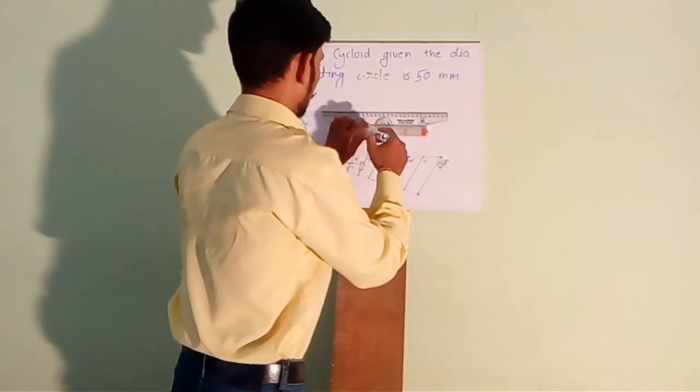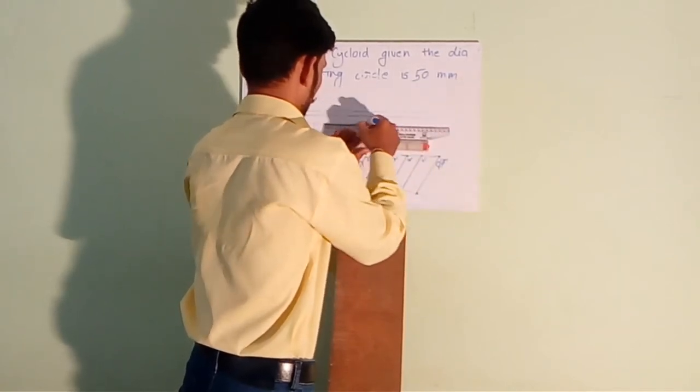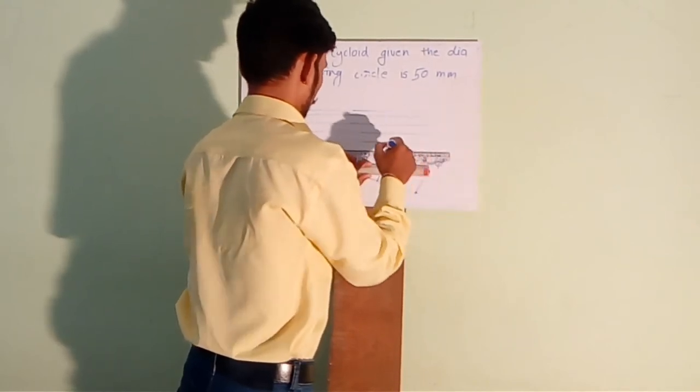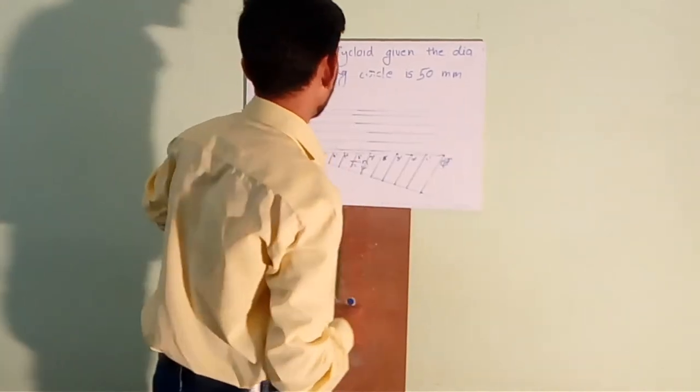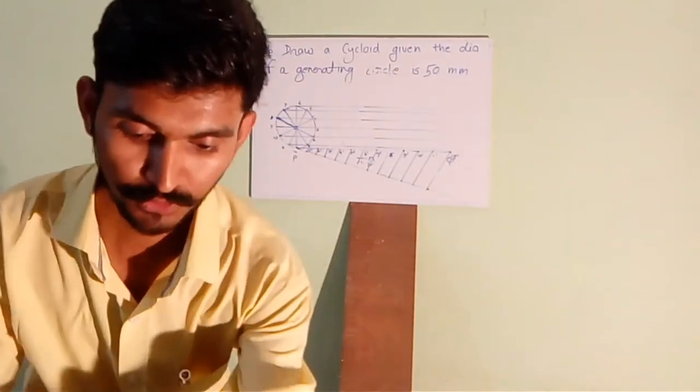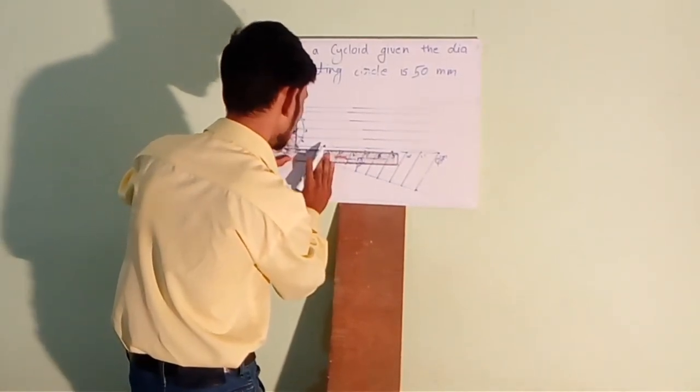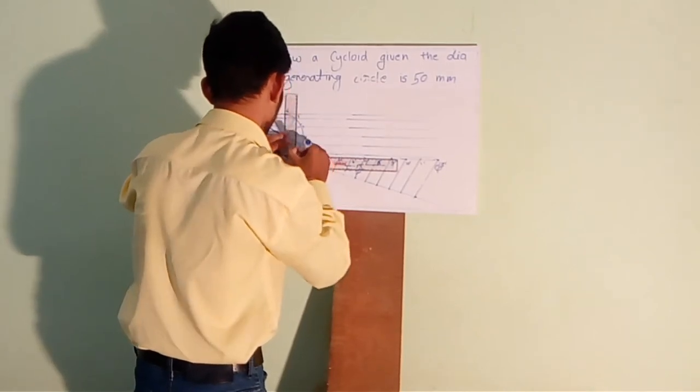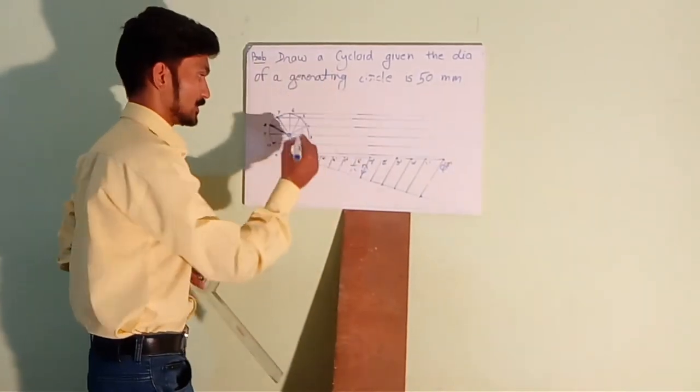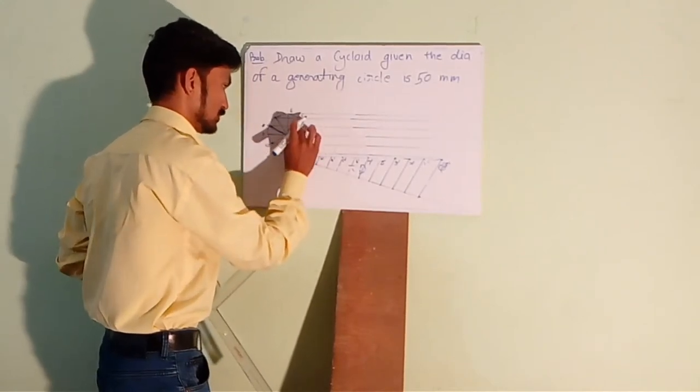And then, draw perpendicular lines to PQ. Draw perpendicular lines such that it will intersect line C, line passing through C. C is the center for the locus of the circle.